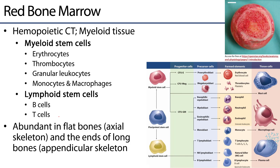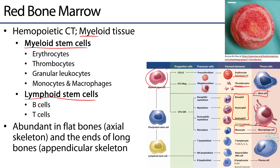Red bone marrow is also known as hemopoietic or hematopoietic connective tissue, or myeloid tissue — myelo refers to marrow. There are two types of stem cells found in red bone marrow: myeloid stem cells and lymphoid stem cells. The myeloid stem cells ultimately give rise to red blood cells, platelets, granular leukocytes, monocytes and their derivatives — macrophages and dendritic cells — as well as mast cells.